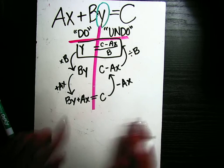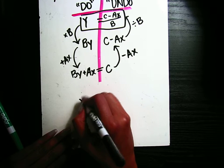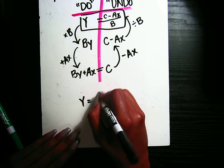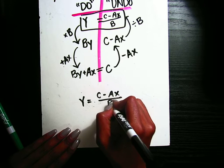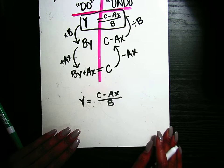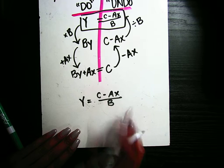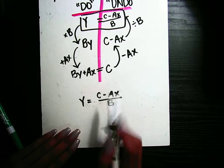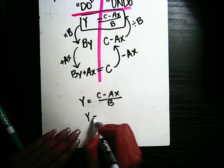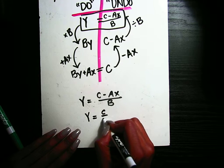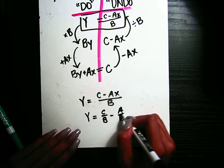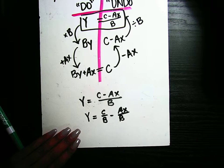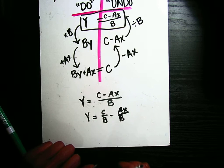Now, just for fun, I'm going to rewrite that down here. So Y equals C minus AX over B. We can separate those two because these two are separate terms. So I'm going to rewrite that as Y is equal to C over B minus AX over B. So all I did was separate those two fractions.